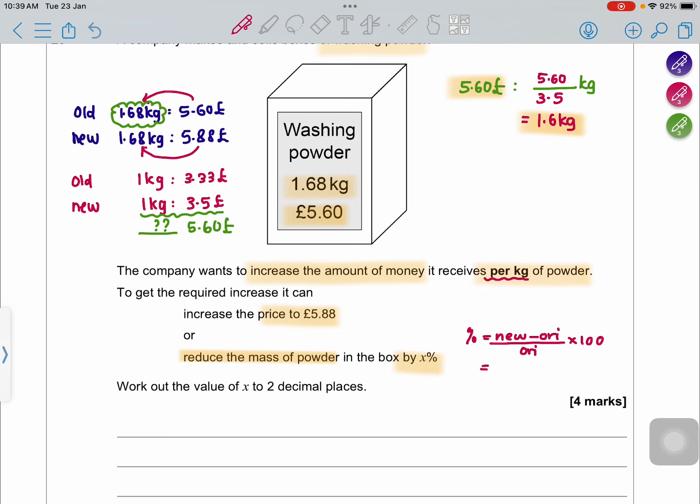What is my new amount now? 1.6 minus original 1.68. When you do that, you will get a minus value because there is a reduction. That is -4.76 percent. So the answer for your x is 4.76%.